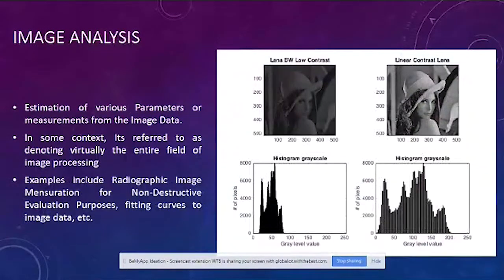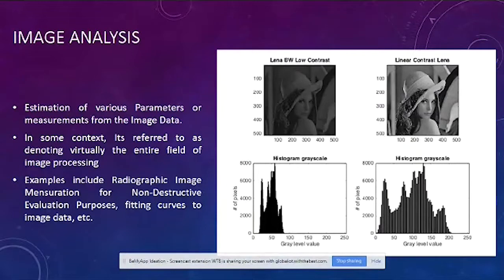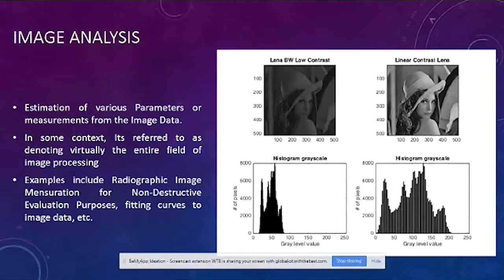Image analysis is sometimes seen as the entire use case of image processing. It gives estimation of various parameters or measurements from image data. Examples include non-destructive evaluation, fitting curves to image data, and radioactive image measurement. We apply certain algorithms to understand the pixel density, what kind of image it is entirely, and what kind of objects it contains. Image analysis also helps primarily in object detection and color identification — for instance, a grayscale histogram shows low contrast versus linear contrast distributions.